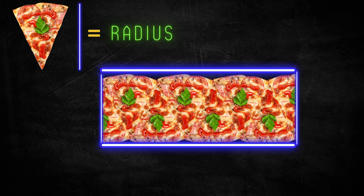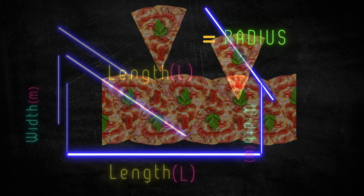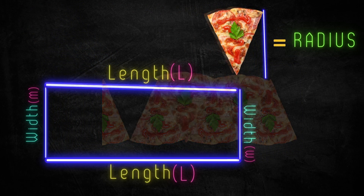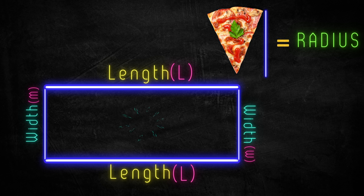If the pieces are small, it is similar to a rectangle shape. We are already familiar with the area of a rectangle. The shorter one is the width and the longest one is the length, simply L.